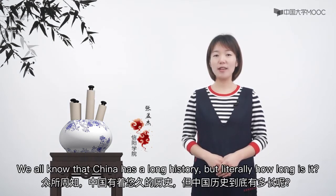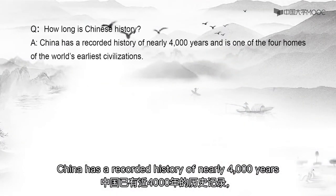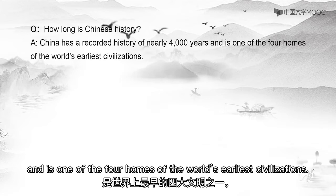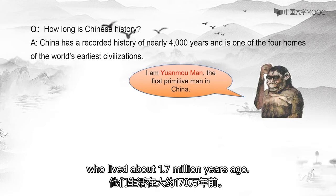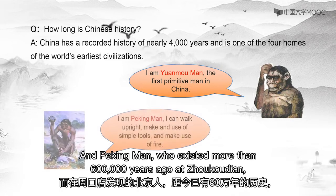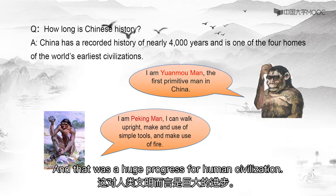We all know that China has a long history, but literally how long is it? China has a recorded history of nearly 4,000 years and is one of the four homes of the world's earliest civilizations. The first primitive man known to have existed in China lived about 1.7 million years ago, and Peking Man, who existed more than 600,000 years ago at Zhoukoudian, could walk upright, make use of simple tools, and make use of fire.